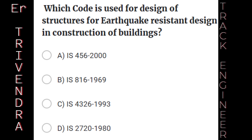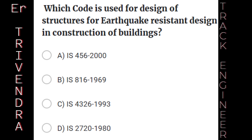Which code is used for design of structures for earthquake-resistant design in construction of buildings? A. IS 456:2000. B. IS 816:1969. C. IS 4326:1993. D. IS 2720:1980. The right answer is: IS 4326:1993.